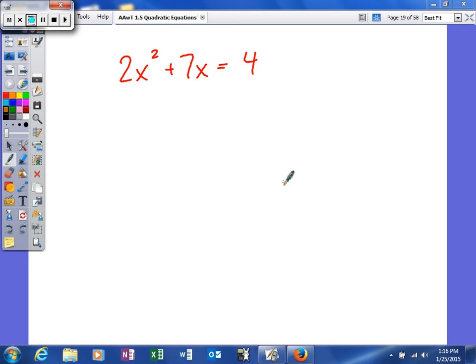So what I'm going to do is factor. The first thing I need to do is get it set equal to 0. So I'm going to move that 4 to the other side by subtracting 4.